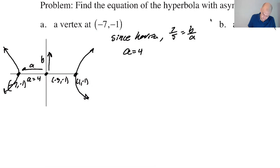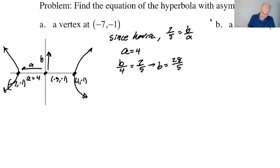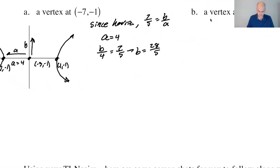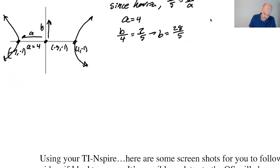And so b/4 is 7/5. So b is 28/5. And the squaring fun continues. Let's do (30-2) squared. So that's going to be 900 - 60 + 4. So that's 844.